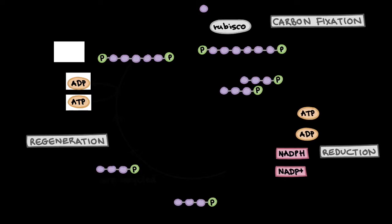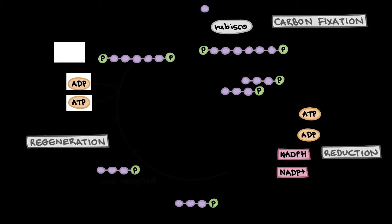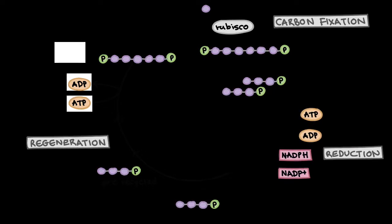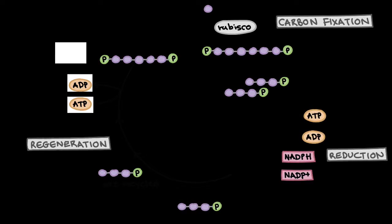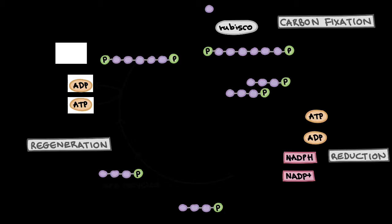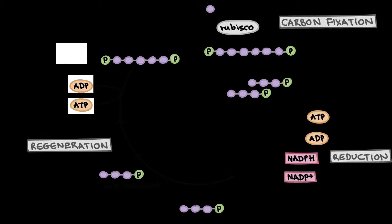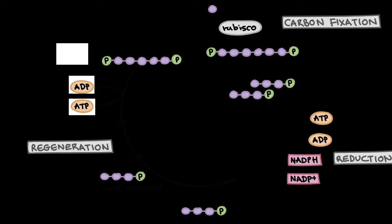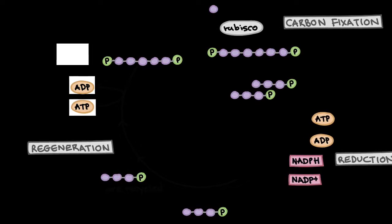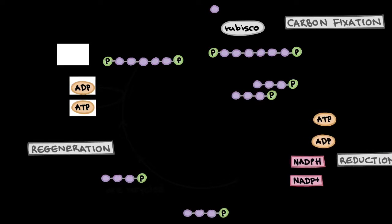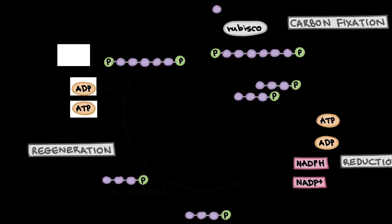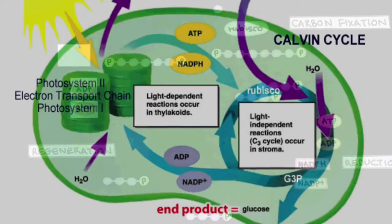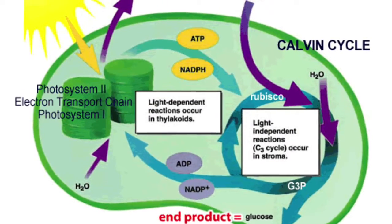Today we're going to be taking a look at the light-independent, or the Calvin Cycle, which is where carbohydrate molecules are assembled by using energy harvested from the light-dependent reaction — the ATP and NADPH from yesterday. This takes place in the stroma.